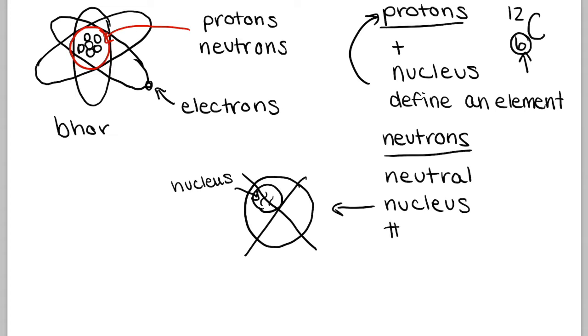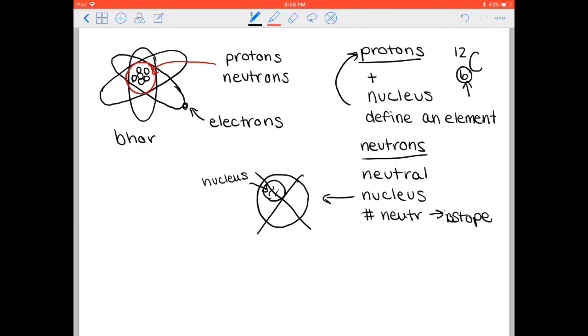Neutrons, if the number of neutrons changes, then you get what's called an isotope. We'll talk more about what isotopes are, but that's just something you might want to think about. Neutrons don't participate in bonding either.